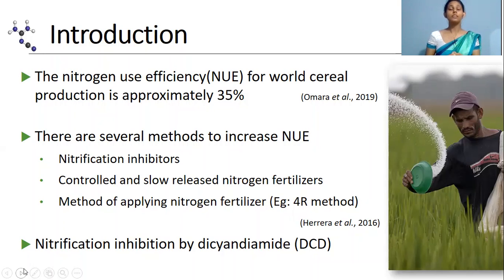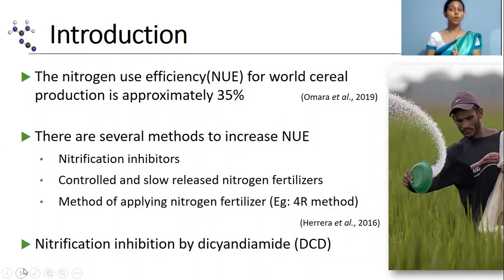Therefore, scientists have introduced some methods to increase nitrogen use efficiency. As an example, use of nitrification inhibitors, use of controlled and slow release fertilizers, and following appropriate methods to apply nitrogen fertilizers are some of the examples.